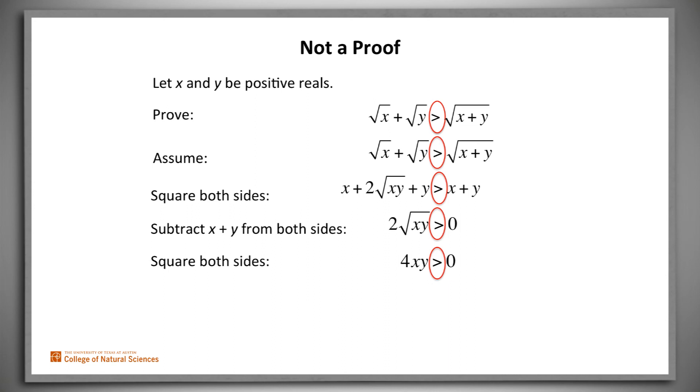So far, everything we've done is valid. The problem is that we don't have a useful proof. What we have is a proof that if our assumption is true, then 4xy is greater than zero. But we already knew that 4xy was greater than zero. What we don't have is a proof that the square root of x plus the square root of y is greater than the square root of x plus y. We have a proof that if that claim is true, then it's true. But that's just a tautology that doesn't prove anything new.